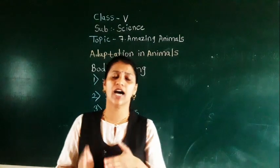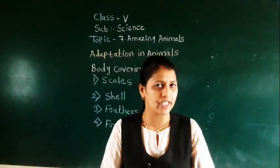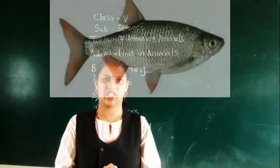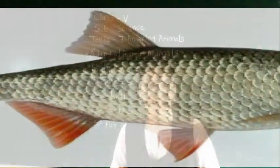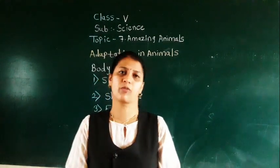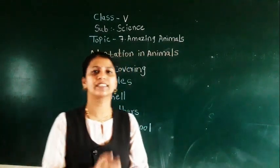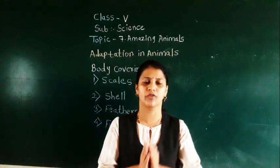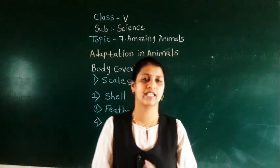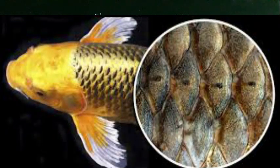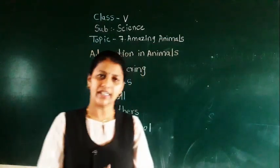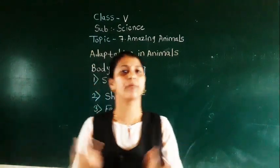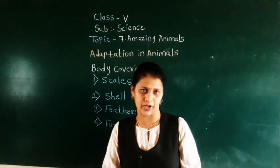See, the animals which are living in the water — how is their body? Can you imagine one? Mostly we can imagine the fish. How is the body structure of the fish? It is streamlined. And it has scales — not your ruler scale, but the scales you can see on fishes. Why do they have scales? To remove water from the body.